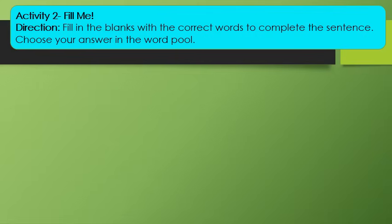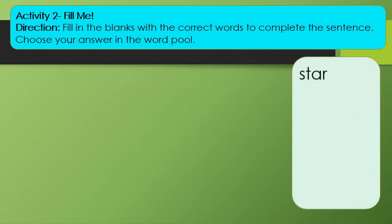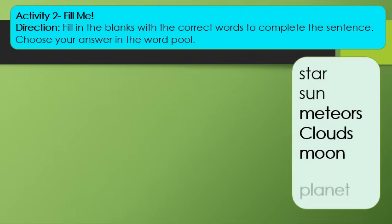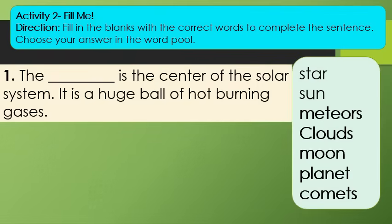Activity 2. Fill me. Fill in the blanks with the correct words to complete the sentence. Choose your answer in the word pool. This is the word pool: Star, Sun, Meteors, Clouds, Moon, Planet, and Comets. Number 1. The blank is the center of the solar system. It is a huge ball of hot burning gases.